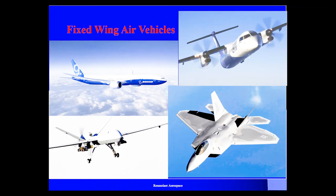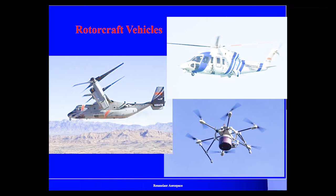Here at Rensselaer, we have three different tracks for an aero degree. The first, in aeronautical engineering, is the fixed-wing air vehicle track, where you work on fixed-wing air vehicles which may be jet engine, turboprop, or unmanned drone. The next is our rotorcraft track, which involves helicopters, less traditional tilt-rotor vehicles such as the V-22 Osprey shown here, and multi-rotor drones.